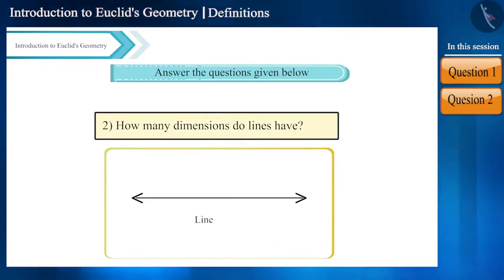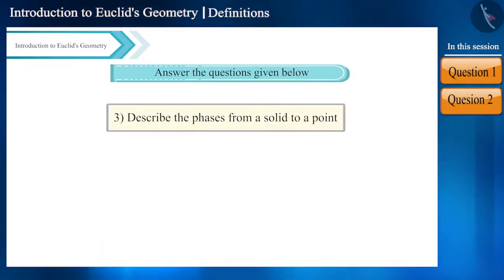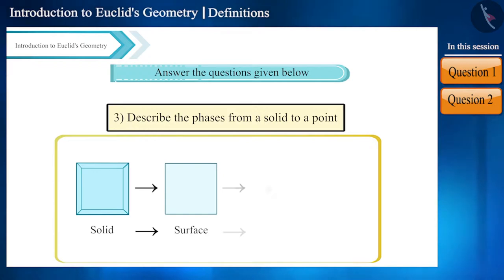Third question - we know the phases from a solid to a point. Boundaries of a solid is a surface, boundaries of a surface is a line, and line ends in a point. Therefore, the phases will be solid, surface, line and point.